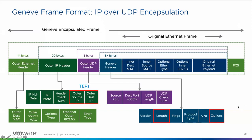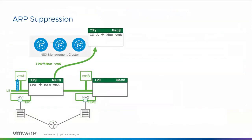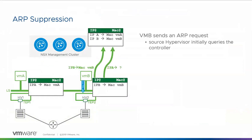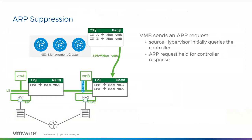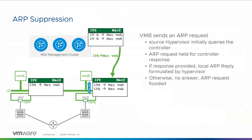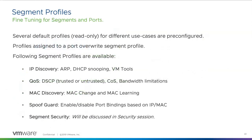ARP suppression is handled this way: the NVDS learns the MAC-to-IP association by snooping ARP and DHCP traffic. That information is then pushed to the central control cluster. If ARP does not get an answer, it floods the network to find it. A VM is ARPing to find the MAC of another VM. Once NSX learns a route, it's going to retain that in the NVDS so that it doesn't have to keep doing it over and over again — unless of course the machine moves.